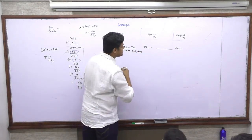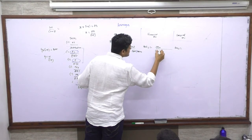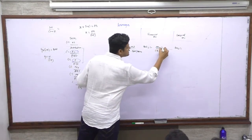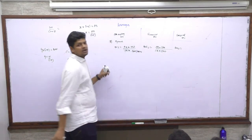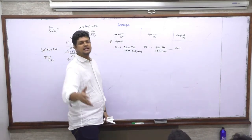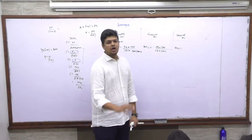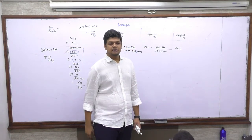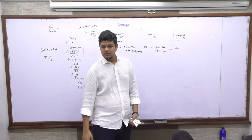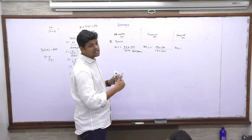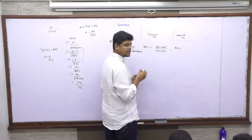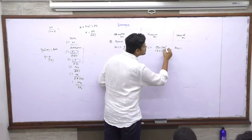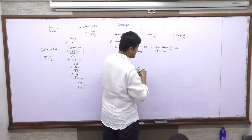For degree of financial leverage, the dynamic formula is percentage change in EBT upon percentage change in EBIT — but assuming there is no tax, since we don't assess the impact of tax in leverages. If there is no tax, EBIT equals PAT. And if we divide PAT by number of shares, we get EPS. So they may give us change in EBIT, or instead they may give us change in PAT or change in EPS, which will be the same thing.